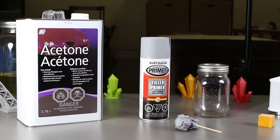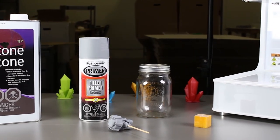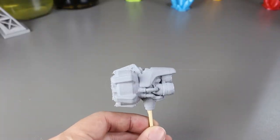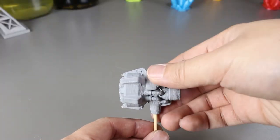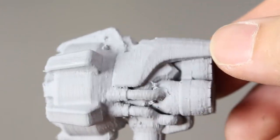So we already sprayed a layer of primer onto the print, and now we just have to place it into the jar. Before we do that, let's take a look at the print. Here you can see even after a layer of the primer, there's still a lot of lines and you can still see all the separate layers in this print.